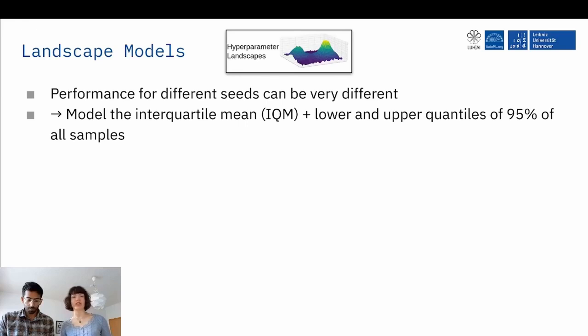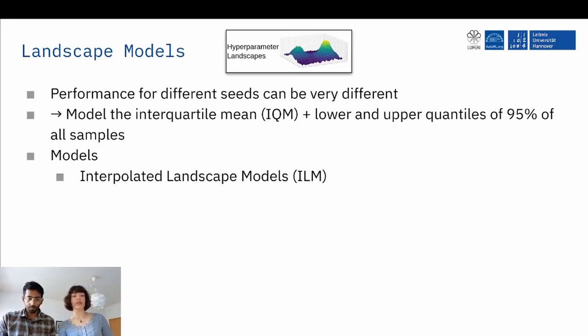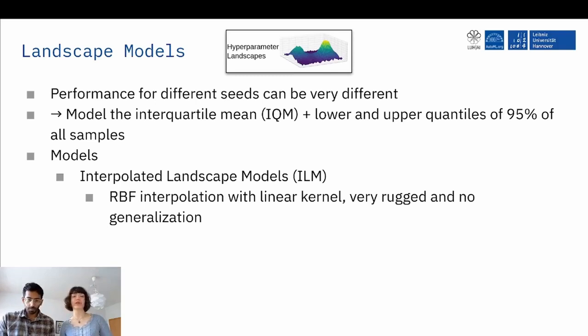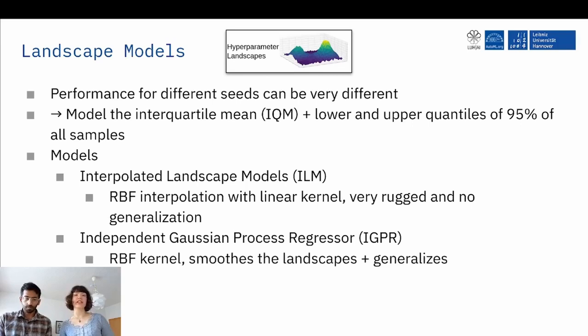And we have two models. The first one is interpolated landscape models. It's just a simple RBF interpolation with a linear kernel and their landscapes look very rugged and we don't have any generalization. And the second class are independent Gaussian process regressors. And we also use an RBF kernel here. And those landscapes are very smooth and can generalize a little bit better to unseen data points. And in this presentation, we focus on the latter ones.